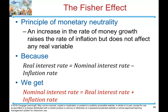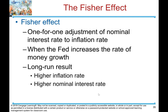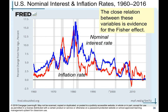The Fisher effect: the principle of monetary neutrality says an increase in the rate of money growth raises the rate of inflation but does not affect real variables. Because the real interest rate equals the nominal interest rate minus the inflation rate, we get: nominal interest rate equals real interest rate plus inflation rate. The Fisher effect is the one-to-one adjustment of the nominal interest rate to the inflation rate. When the Fed increases the rate of money growth, the long-run result is a higher inflation rate and higher nominal interest rate. The close relation between these variables is evidence of the Fisher effect.